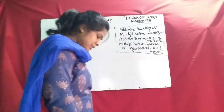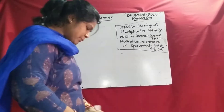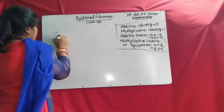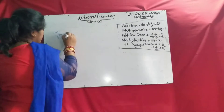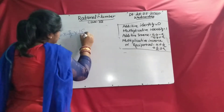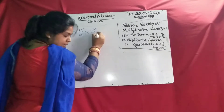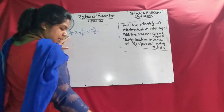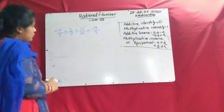Now come to Example 2, multiplication. Suppose: minus 4/5 multiplied by 3/7 multiplied by 15/16 multiplied by minus 14/9. So: minus 4/5 into 3/7 into 15/16 into minus 14/9.